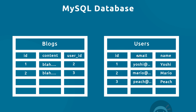Each column represents a property on that record. We have two example tables: a blogs table with an id, a content property, and a user id; and a users table with an id, an email property, and a name property. Each column would expect a particular type of data — for example, the user id and ids could be integers, while content, email, and names would be strings. Each blog is written by a specific user, so there's a user id associated with each blog record that corresponds to an id in the users table — this is what's known as a foreign key.